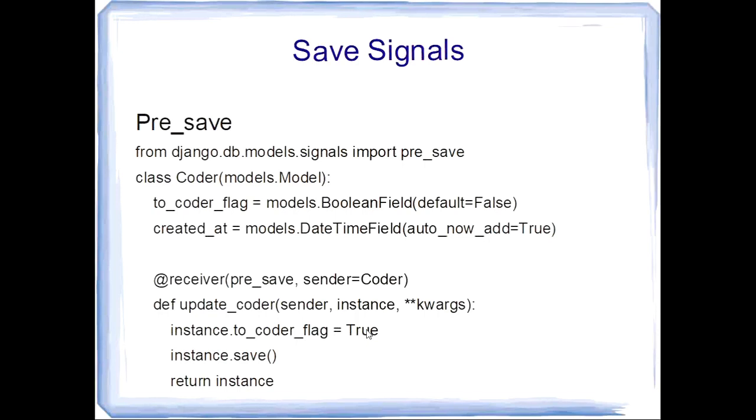We use instance.to_coder_flag equals true. We assign this value to this field, then we save and return the instance value. This save method is called after the instance is created and before it is saved to the database. In such a case, we can use this pre-save signal.